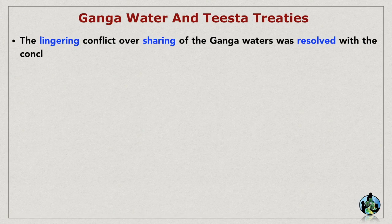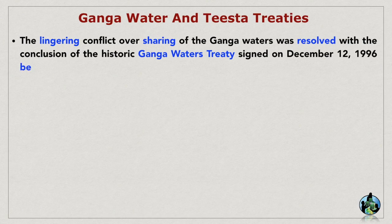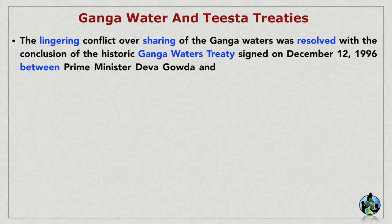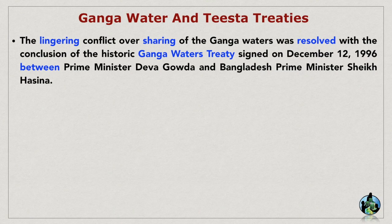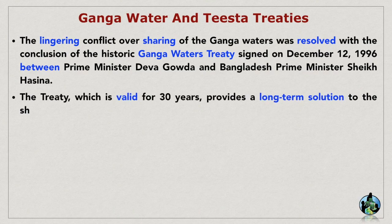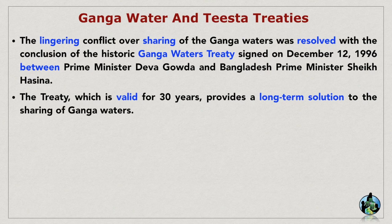Ganga Water and Tista Treaties: The lingering conflict over sharing of the Ganga waters was resolved with the conclusion of the historic Ganga Waters Treaty, signed on December 12, 1996, between Prime Minister Dev Gowda and Bangladesh Prime Minister Sheikh Hasina. The treaty, which is valid for 30 years, provides a long-term solution to the sharing of Ganga waters.